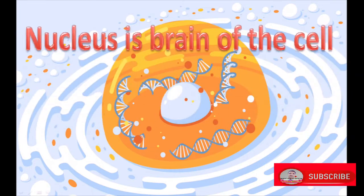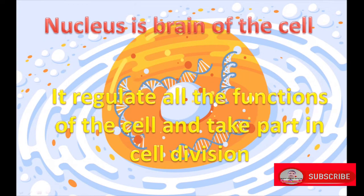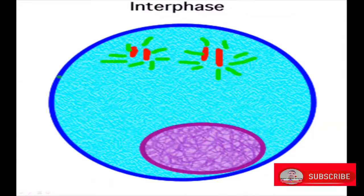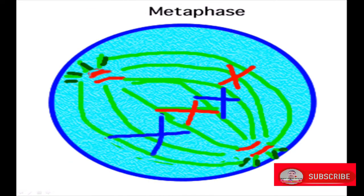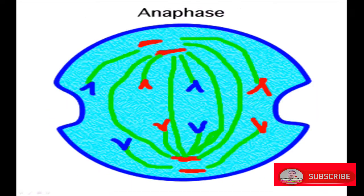The nucleus is the brain of the cell. It regulates all the major functions of the cell and takes part in cell division. It contains DNA, which is the heredity carrier. It helps in cell division through various steps, causing cells to multiply in number.